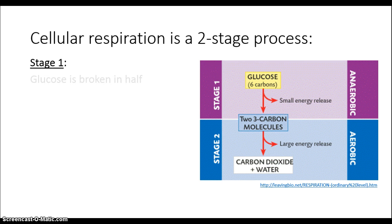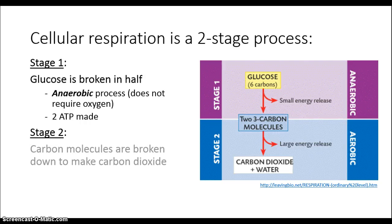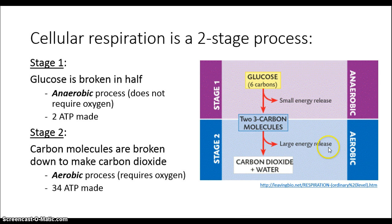In the first stage of cellular respiration, you have a large glucose molecule with six carbons broken in half. This process is anaerobic — that is, it does not require oxygen — but only a small amount of ATP is made here. The largest amount of ATP is made in the second stage, where the carbon compounds that have been made are broken down fully to give you carbon dioxide, as well as combining with oxygen to make water as a waste product. Here, a large amount of ATP is made — about 34 ATP per glucose molecule that you begin with.